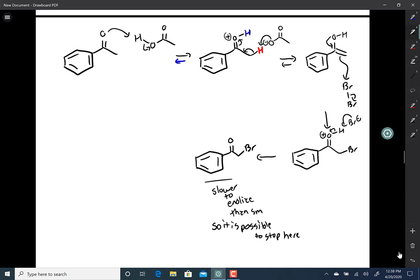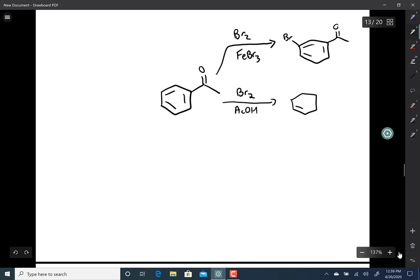So turns out this compound is pretty versatile with bromine depending on what conditions we use. If we use bromine and a Lewis acid like FeBr3, we have electrophilic aromatic substitution. If we add bromine and acetic acid, weak acid, we end up with alpha bromination.